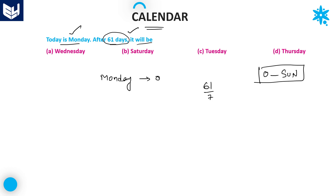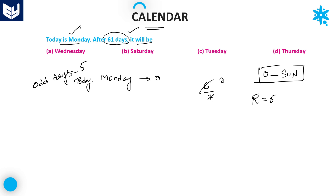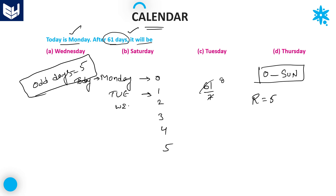61 divided by 7: 7 goes 8 times giving 56, and the remainder is equal to 5. Therefore the number of odd days is equal to 5. Given that today is Monday (zero), we count: 1 is Tuesday, 2 is Wednesday, 3 is Thursday, 4 is Friday, and 5 is Saturday.